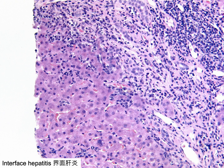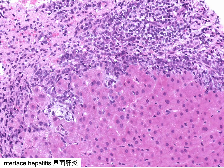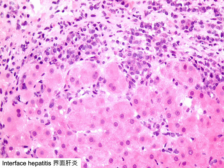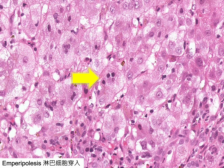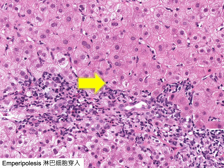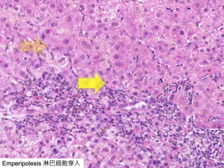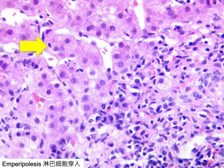Lymphoplasmacytic cells breach the interface between the portal tract and liver parenchyma, encircling individual and small clusters of periportal hepatocytes. This feature is interface hepatitis, previously known as piecemeal necrosis. Emperipolesis is characterized by the engulfment of lymphocytes by hepatocytes in the periportal region and has been regarded as one of the typical histological features of autoimmune hepatitis. Emperipolesis is not uncommonly accompanied by interface hepatitis.